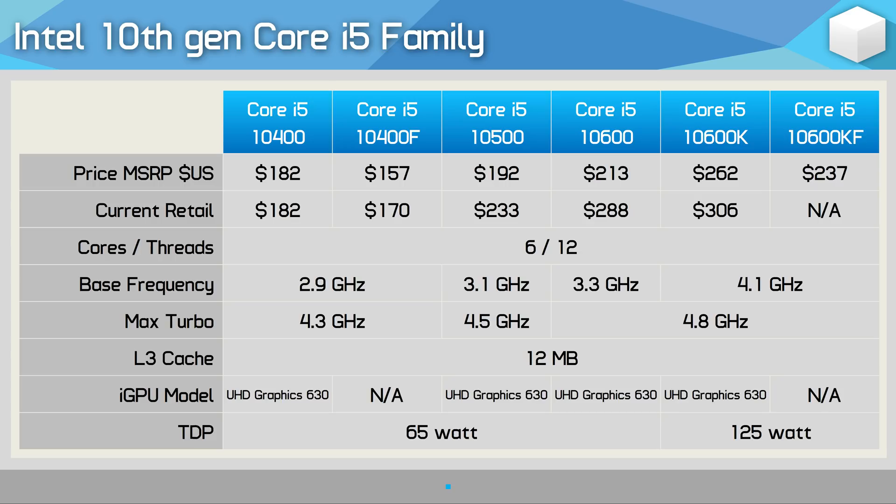The difference between the 10400, 10500, and 10600 is just 200–300MHz. Since they're locked parts, you won't be able to change that. The 10600K and its F variant are fully unlocked, providing you're using a Z-series motherboard, which will allow you to overclock them.